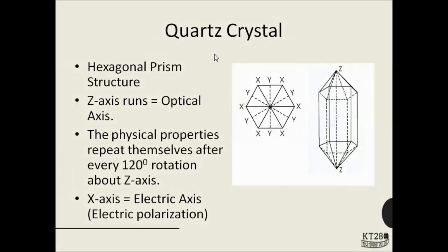One popular piezoelectric crystal is the quartz crystal, which has a hexagonal prism structure. This long axis is called the z-axis. In the top view, the axis joining the corners is called the x-axis, and the axis going through the midpoint of the sides is the y-axis. The z-axis is known as the optical axis; because of the symmetry of its hexagonal shape, the physical properties are repeated after every 120-degree rotation. The x-axis is called the electric axis, and along this axis electric polarization occurs, so we have to apply the potential difference across one of the x-axes.